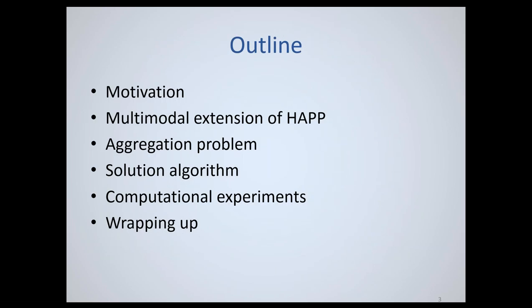To address that, here's an outline of the talk. I'll start with motivation, which leads to a discussion about a model called the Household Activity Pattern for scheduling people's activity patterns. I'll talk about how that aggregates up to consider interactions between travelers, propose a solution algorithm, discuss computational experiments, and then wrap up. Compared to the presentation I gave at ISTTT last year, this is mostly the same, but I added a few more slides for additional detail.